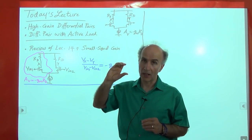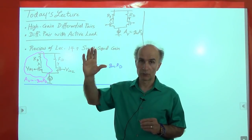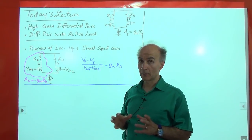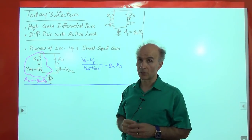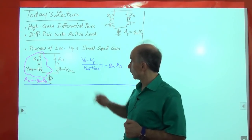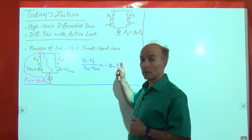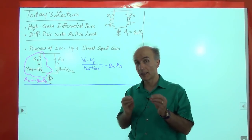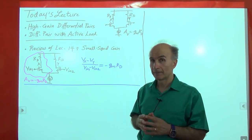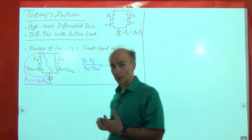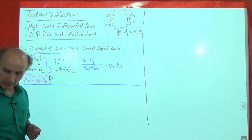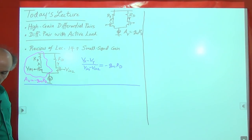As we increase RD under bias conditions, half of the tail current flows through this resistor, so the voltage drop across it keeps increasing. This means the supply voltage has to go up — creating a trade-off between how much gain we can get and how low a supply voltage we can have. That is a critical problem today, as supply voltages are going down from 1.2 volts to 1 volt to 0.9 volts. So we need something with high impedance that does not satisfy Ohm's law — we can replace RD with a current source.